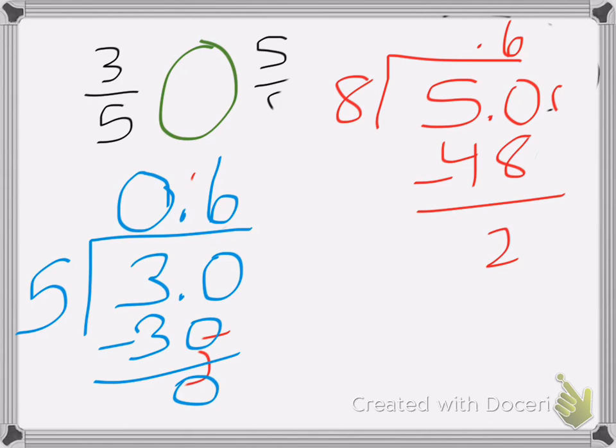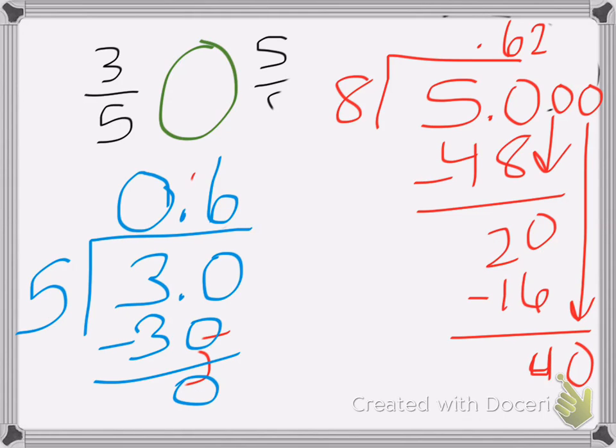Subtract it, get 2, add a 0, bring it down. 8 goes into 20, 2 times, that's 16. Subtract it, add a 0, bring it down. 8 goes into 40, 5 times, which is 40, and we zero out. So 5 eighths is the same as 0.625.